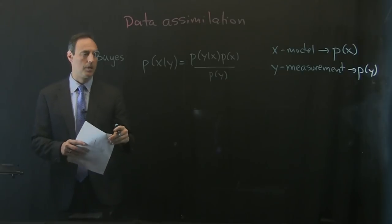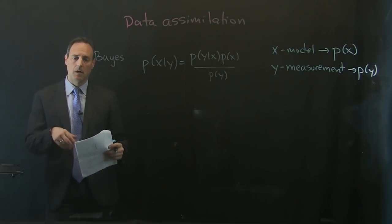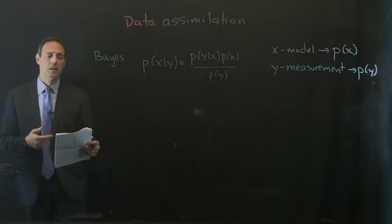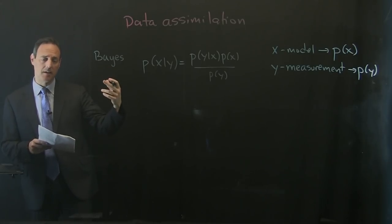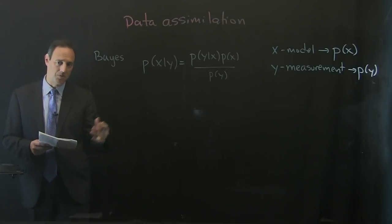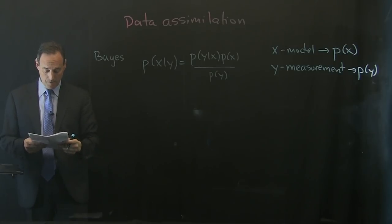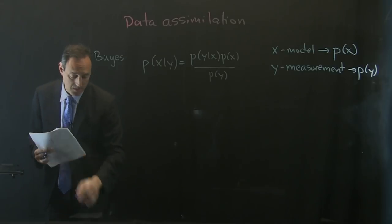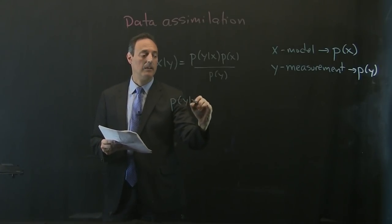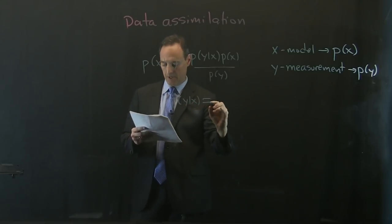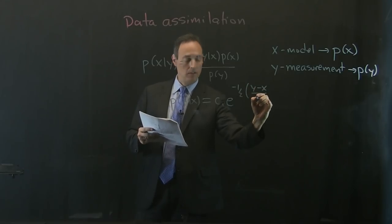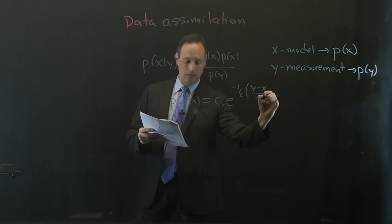Those are two things we can compute in order to determine the model result given measurement y. Assuming Gaussian statistics, as is typical, we write: p(y|x) = c1 * exp(-1/2 * (y - x)^2 / sigma_y^2), where sigma_y is the variance of the measurement - the error distribution of the sensor. We also take the model to be Gaussian: exp(-1/2 * (x - x_naught)^2 / sigma_naught^2), with mean x_naught and variance sigma_naught.